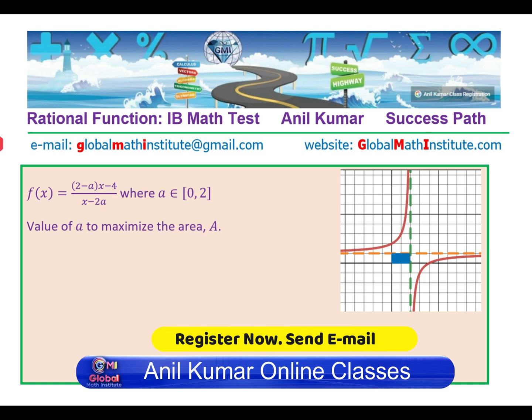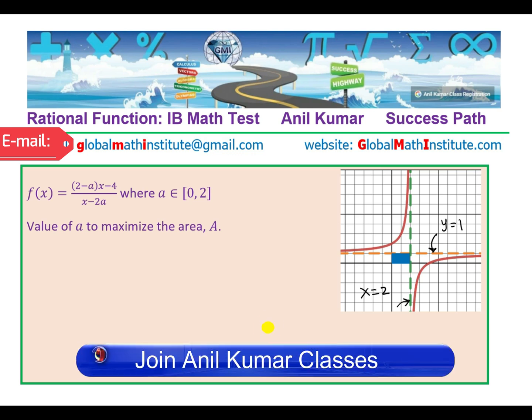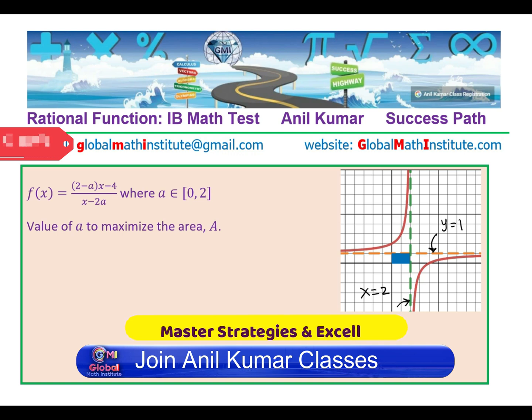So let's take care of the function, which is (2-a)(x-4)/(x-2a). So here you can see that the asymptotes are given to us. The vertical asymptote is at x = 2, right? And the horizontal asymptote is at y = 1. So these values of asymptotes will help us find the value of a also.